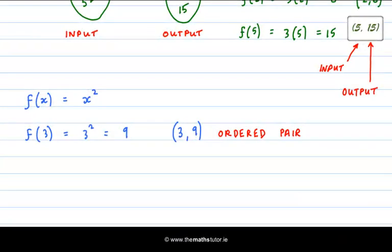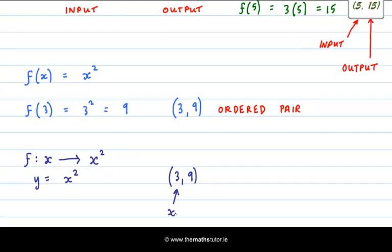Another way to write a function is we could say f takes x and maps it onto, let's say, x squared. Another way again is we could say y equals x squared. In this case, our ordered pair 3 and 9, well, the 3 is the x coordinate and the 9 is the y coordinate. So the order is very important in our ordered pair. Remember that. The first number is the input and the second number is the output.